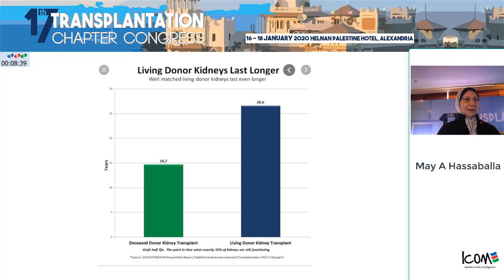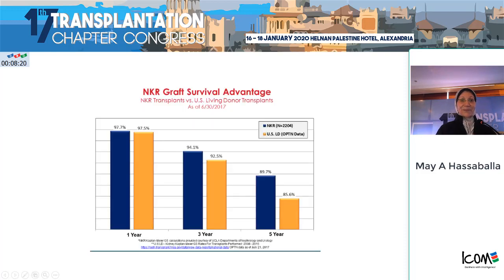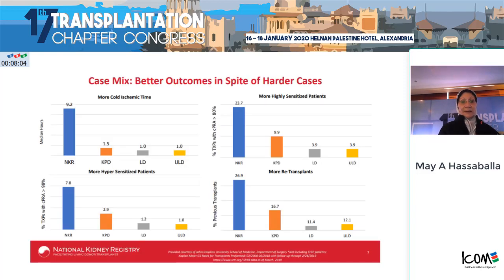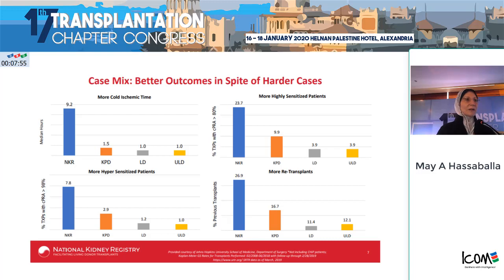Everyone is pushing for KPD to evolve and increase because living donor kidneys last longer than deceased donor kidneys, and pre-emptive transplantation has greater graft survival compared to transplantations after years of dialysis. The outcomes of the National Kidney Registry compared to living donations in the U.S. show that with increasing years the outcomes become better, probably due to superior avoidance of antibody, in spite of handling more difficult cases such as those with longer cold ischemia time, highly sensitized patients, and re-transplants.